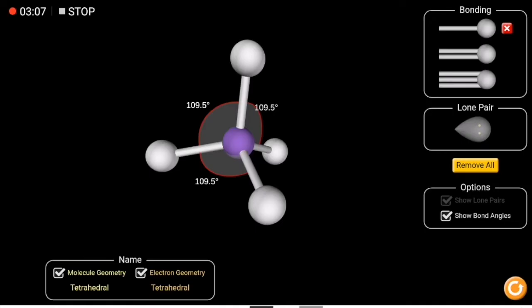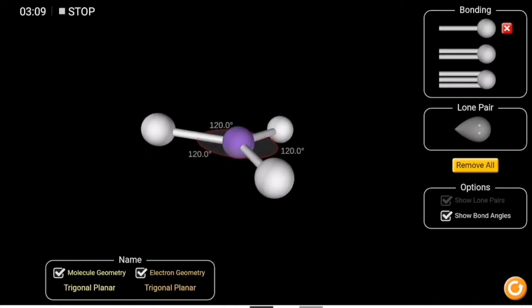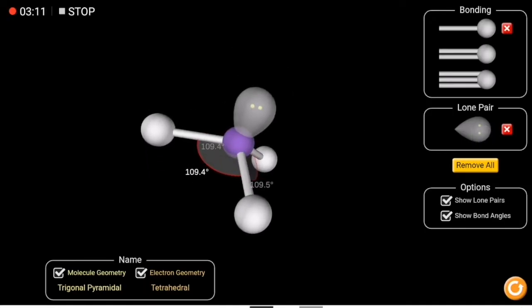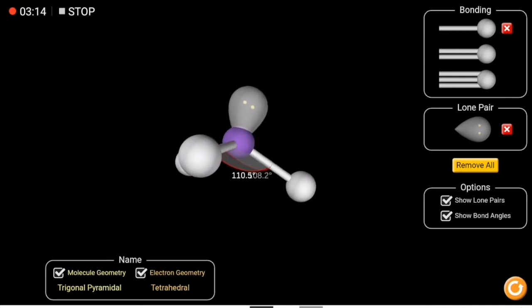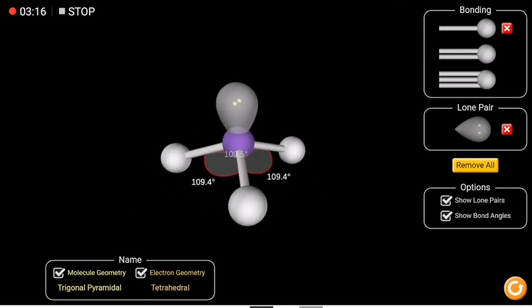Now if I replace one bonding atom with a non-bonding electron, the electron geometry is still the same, tetrahedral, but the shape has changed to trigonal pyramidal. So the angle is slightly less than 109.5. It's exactly 107.